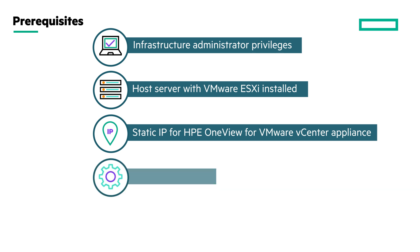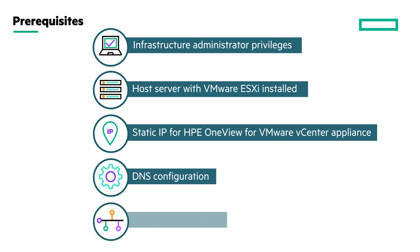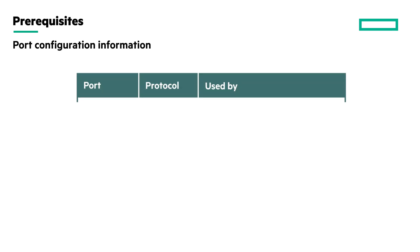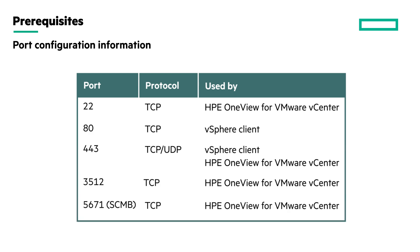The DNS is configured. Validate the forward and reverse DNS entries for the HPE OneView for VMware vCenter appliance IP and your vCenter IP address. Make sure that there is stable network connectivity between VMware vCenter, VMware vSphere client, and HPE OneView appliance. Ensure all the specified ports are enabled.